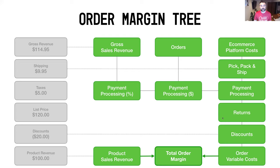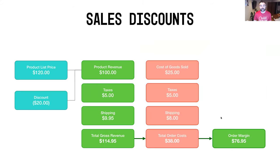To walk you through the different discount options, I'm going to work through the math — I like to show you the numbers. Today we'll cover a few different examples: a straight-up sales discount, a buy-one-get-one incentive, a gift with purchase, and free shipping. Let's start with the first example: a sales discount.